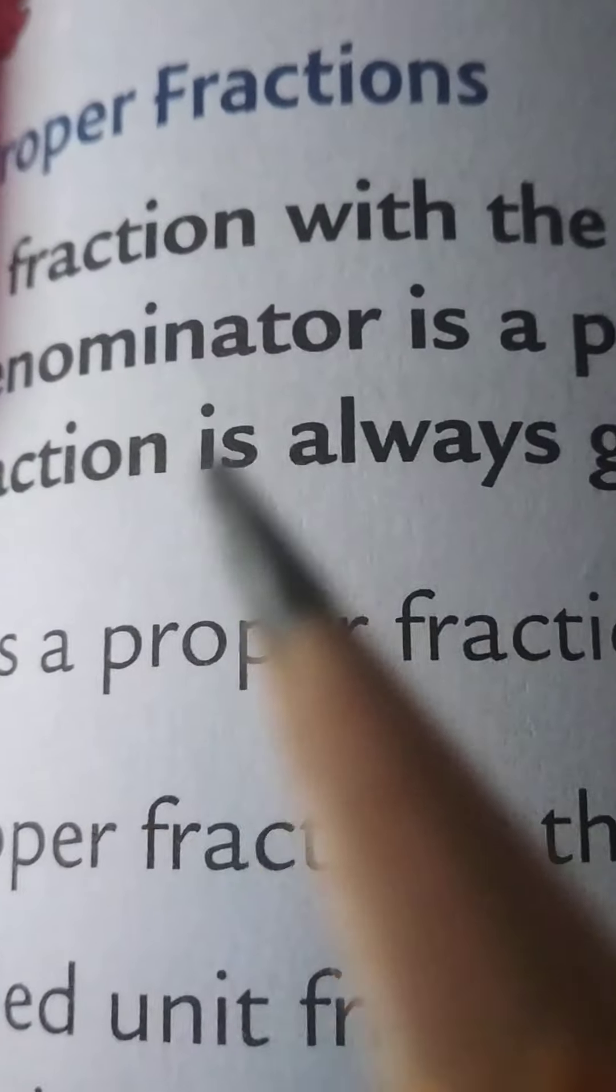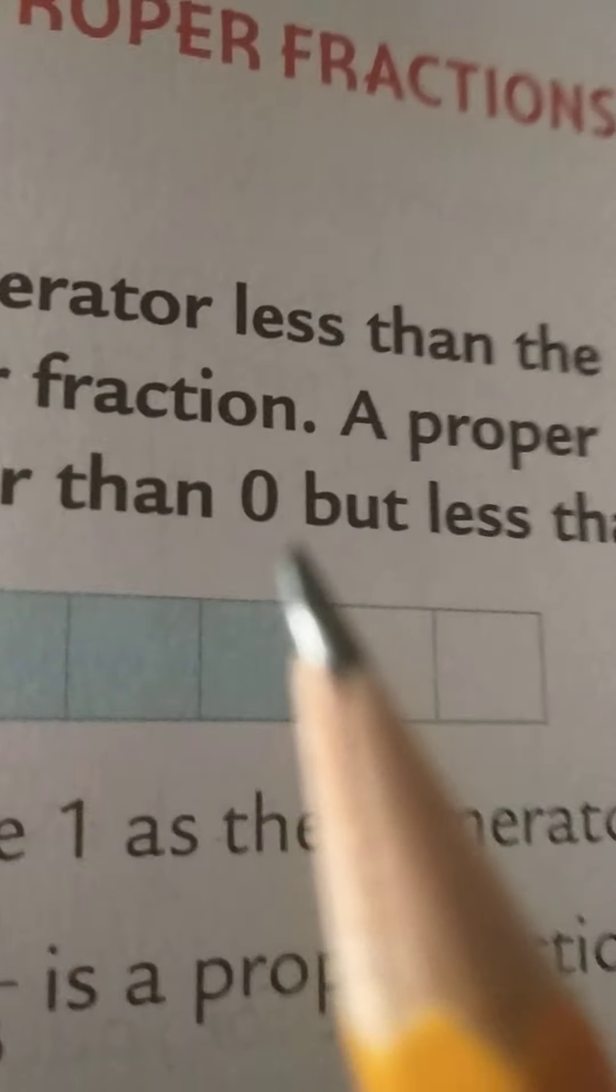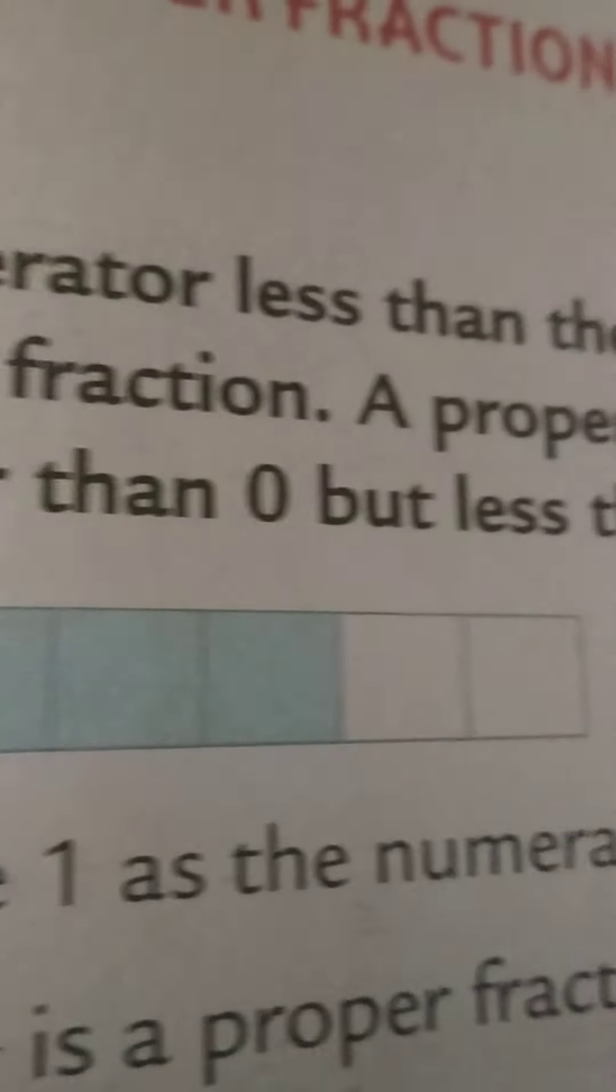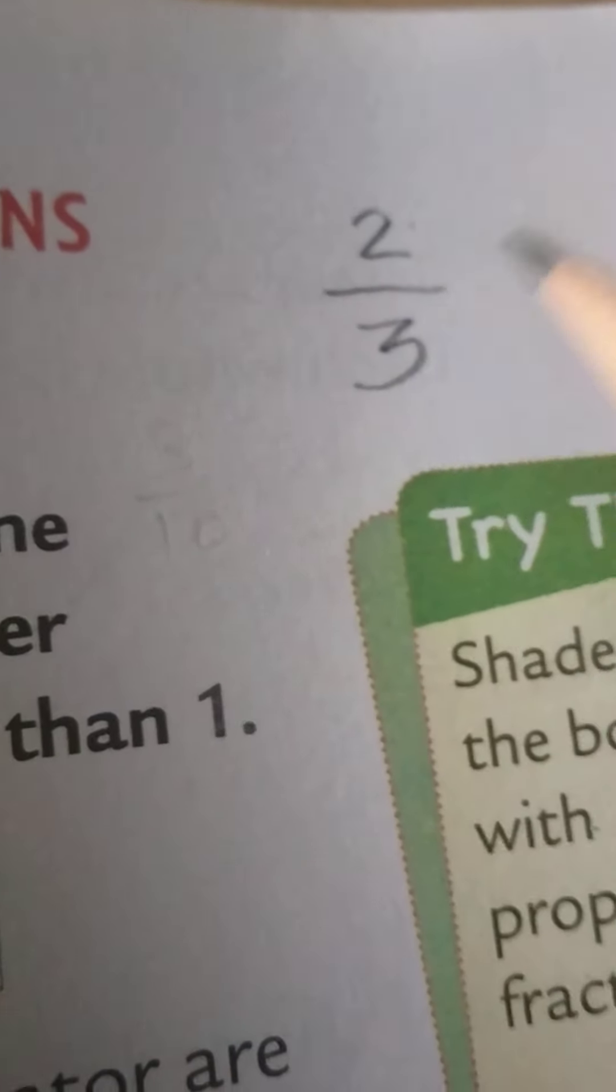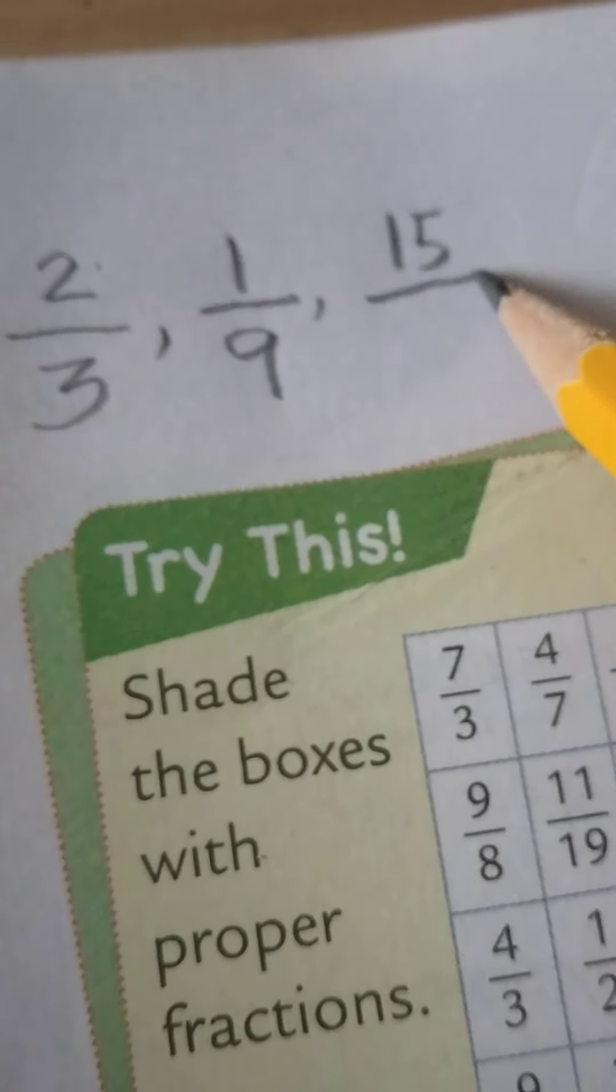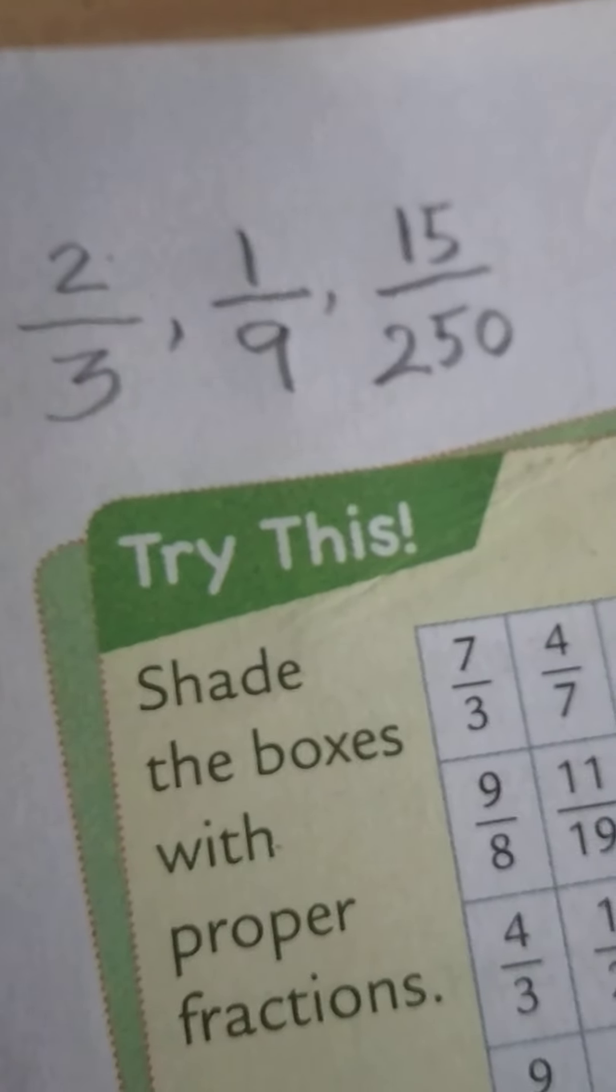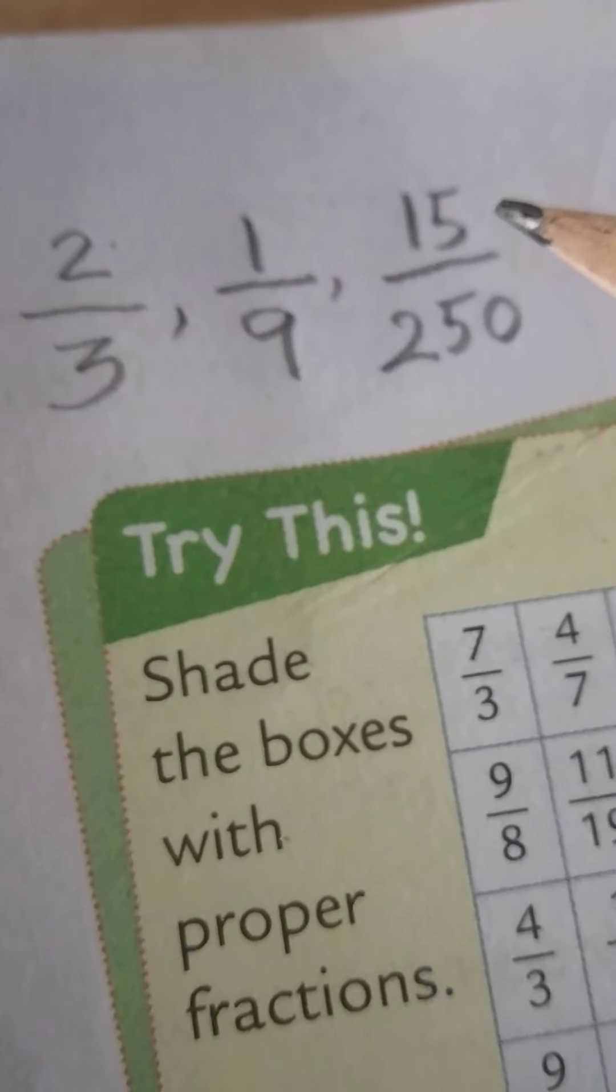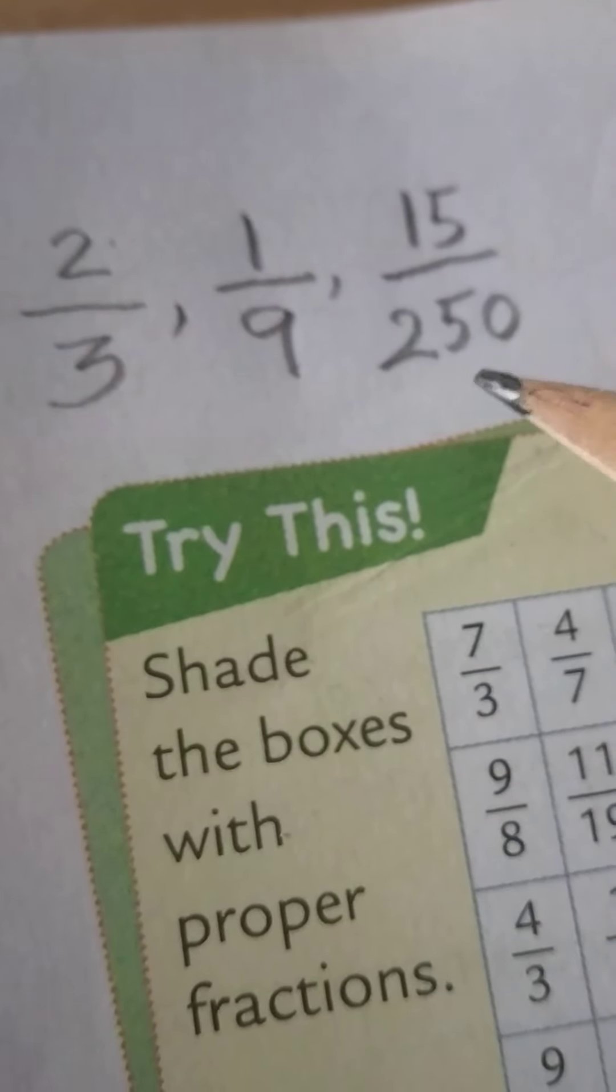A fraction with the numerator smaller than the denominator is called a proper fraction. It's always greater than 0, but it will be less than 1. The numerator is smaller than the denominator. These are called proper fractions where the numerator is smaller than the denominator.